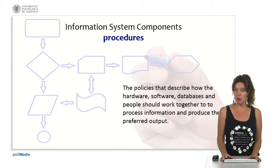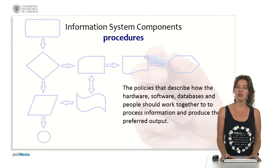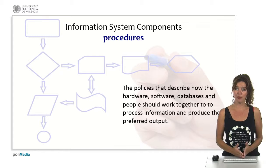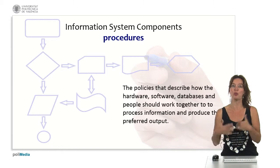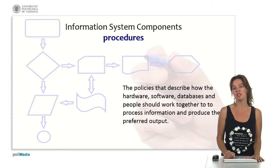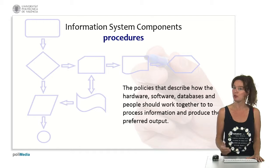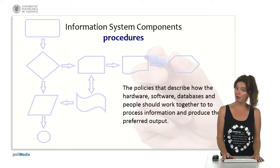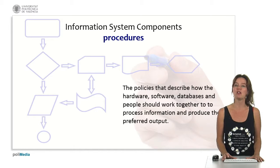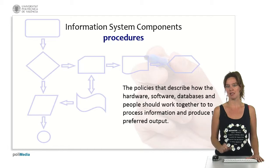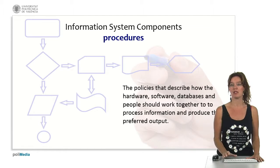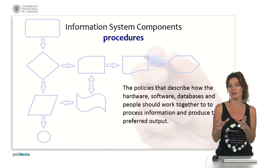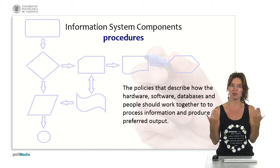The last component of an information system are the procedures. Procedures describe how the hardware, the software, the databases, the data, and the people should work together in order to process the information and produce the preferred output. For example, one procedure is that if the price is above $100, the customer gets a discount. This describes how we use the hardware, the software, the data, and the people in order to obtain information.